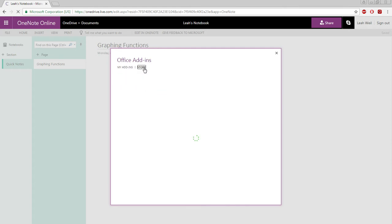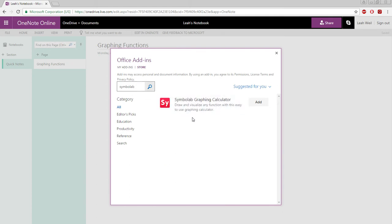This will take a second to download, and then click in the search box and type in Symbolab, and hit Enter. This brings you to the Symbolab graphing calculator, and we'll click Add to the right of it.